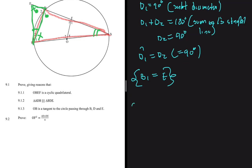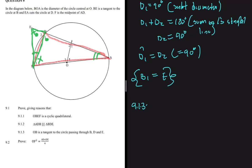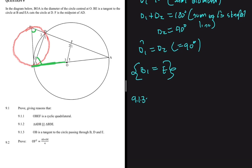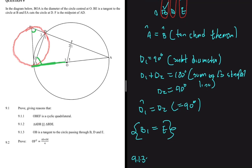Now 9.1.3: prove with reasons that OB is a tangent to the circle passing through B, D, and E. Let's construct that circle — it passes through B, through D, and through E. We have to prove OB is a tangent. If OB is indeed a tangent, the tan-chord theorem must hold: the angle B1 between the chord and the tangent should equal angle E subtended by that chord.